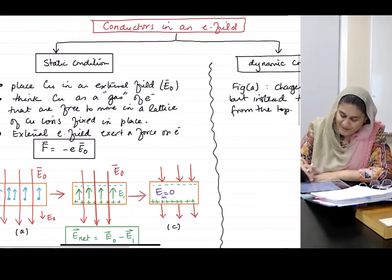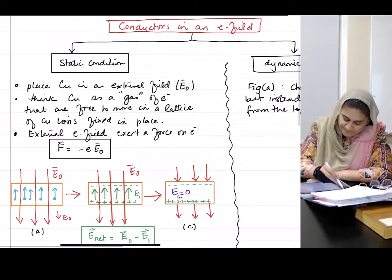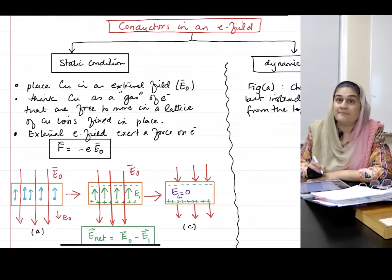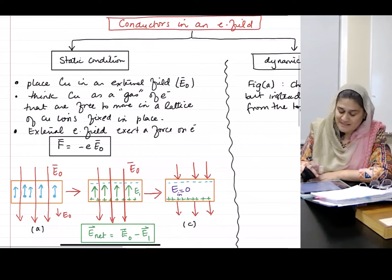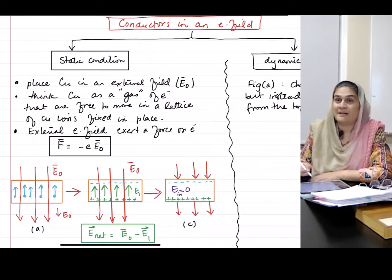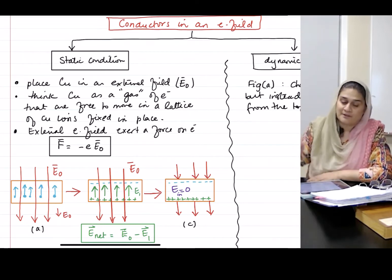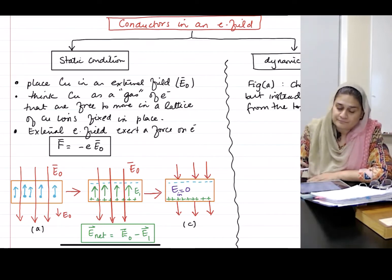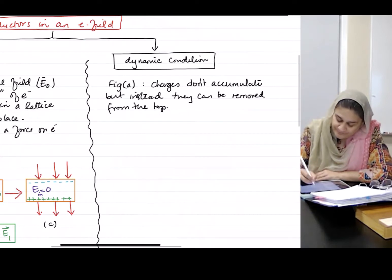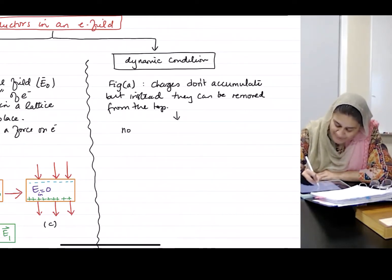What happens? So I have this picture again, figure A, but instead of going to figure B, I'm able to just remove these electrons so they go forward. So what will happen? Well, number one, there's no buildup of charges.